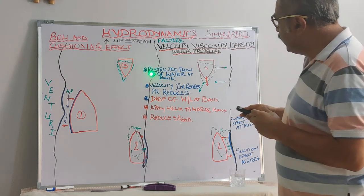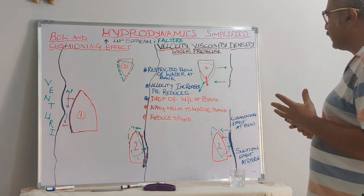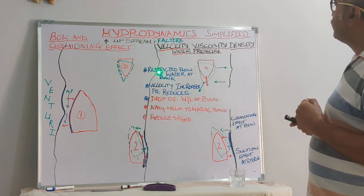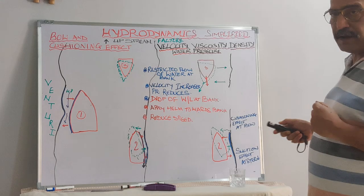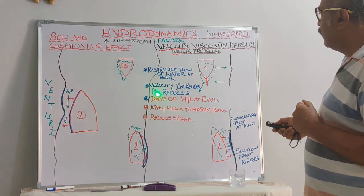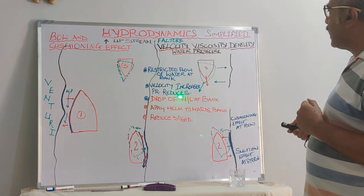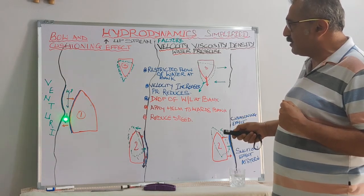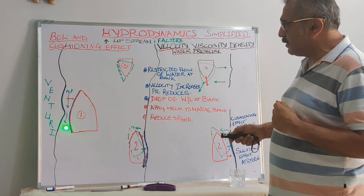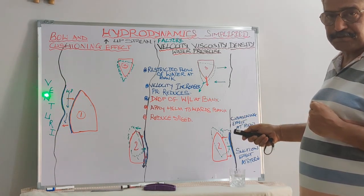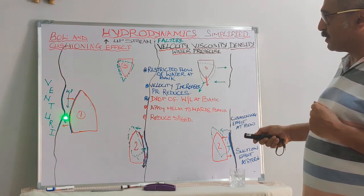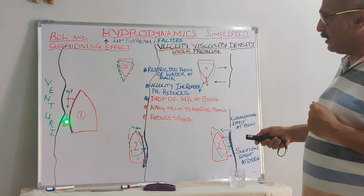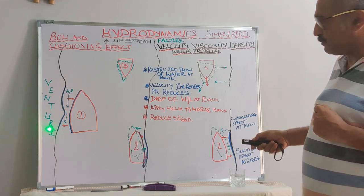I stop over here. Before that, I will revise the subject. In the restricted water, what happens? The restriction of flow of the water at the bank which we have seen here. The velocity increases and the pressure reduces. The velocity increases over here, the pressure reduces. Here the pressure is high. The velocity increases and eventually the effect takes place.